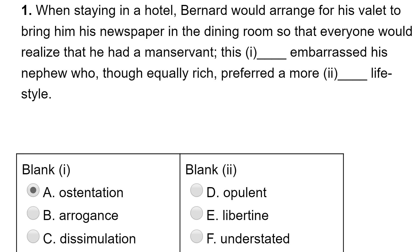This ostentation embarrassed his nephew who, though equally rich — and that guarantees ostentation is right because ostentation is about wealth and there's the synonym: being rich. His nephew preferred a more something lifestyle. I'm expecting the opposite of ostentatious, which is not opulent — that again means rich and showing off. So it's understated: the opposite of showing off. Libertine just means doing anything you want, which is not really the opposite of ostentation. So Bernard showed off and this guy wanted a more understated lifestyle.